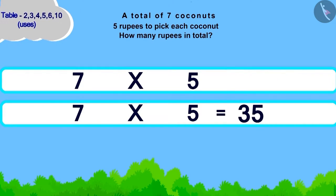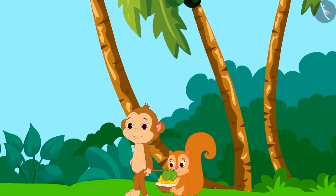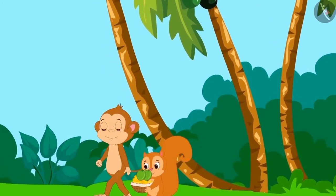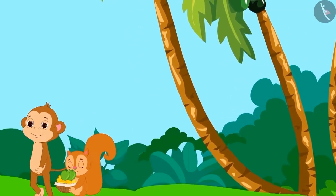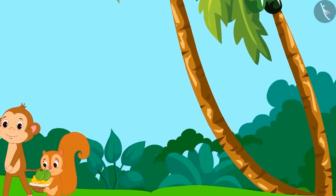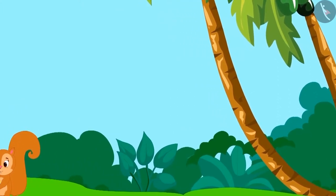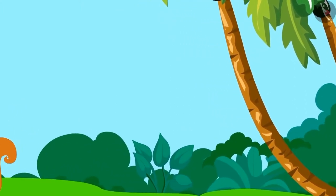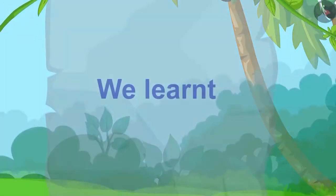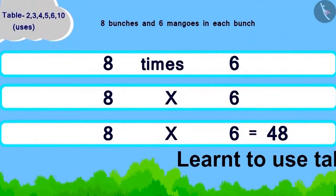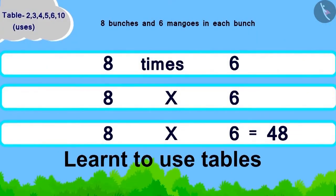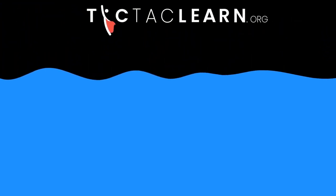You have solved this correctly! Chanda will have to give 35 rupees to Babban. Chanda collected the coconuts and gave money to Babban. Now both of them went to rest under a tree. Children, in this lesson we learned to use tables.